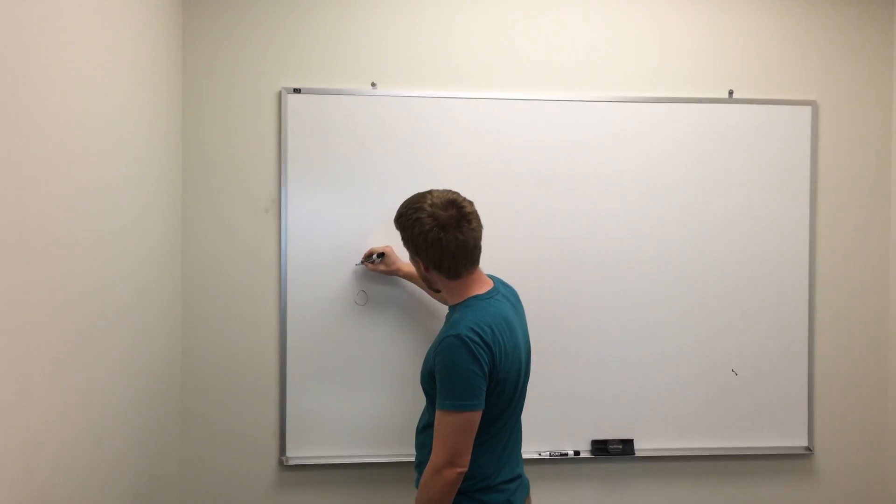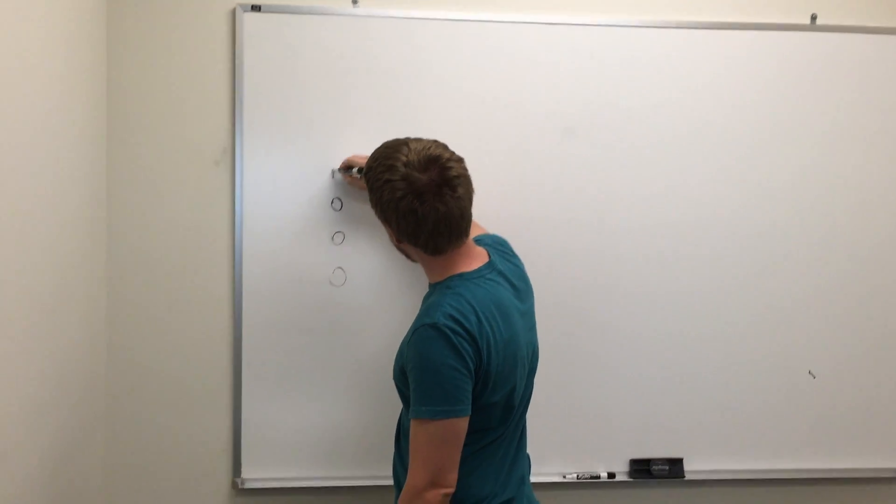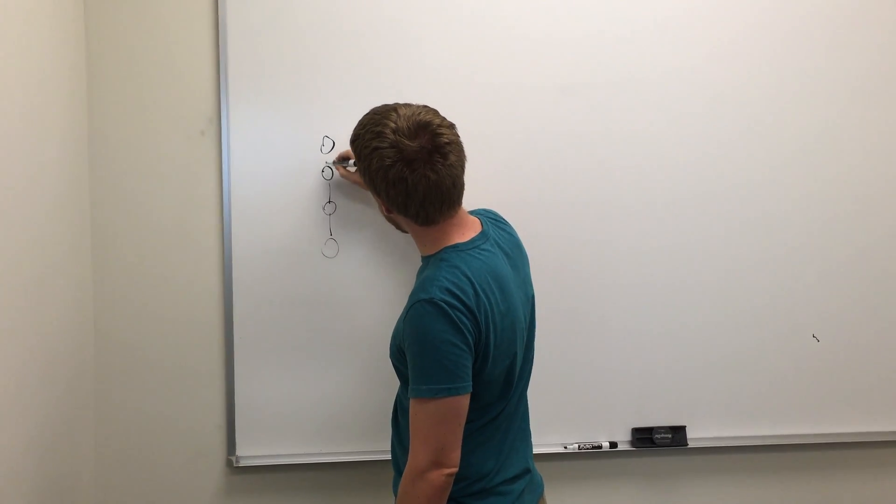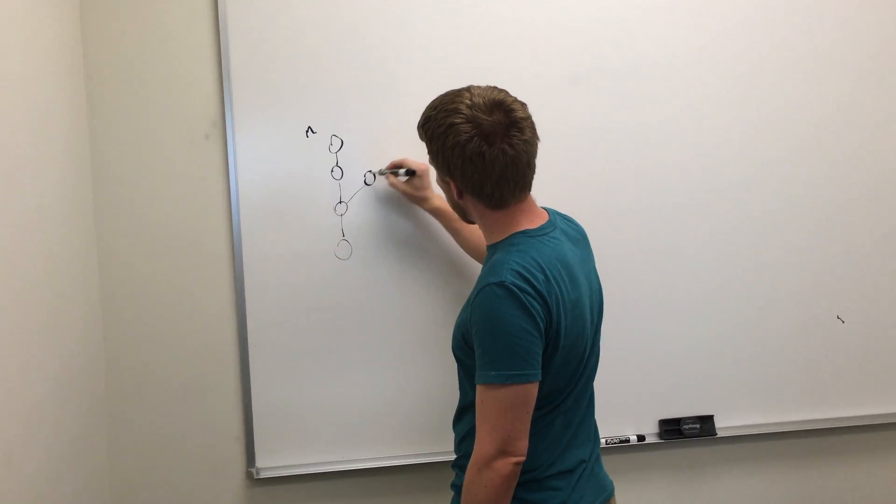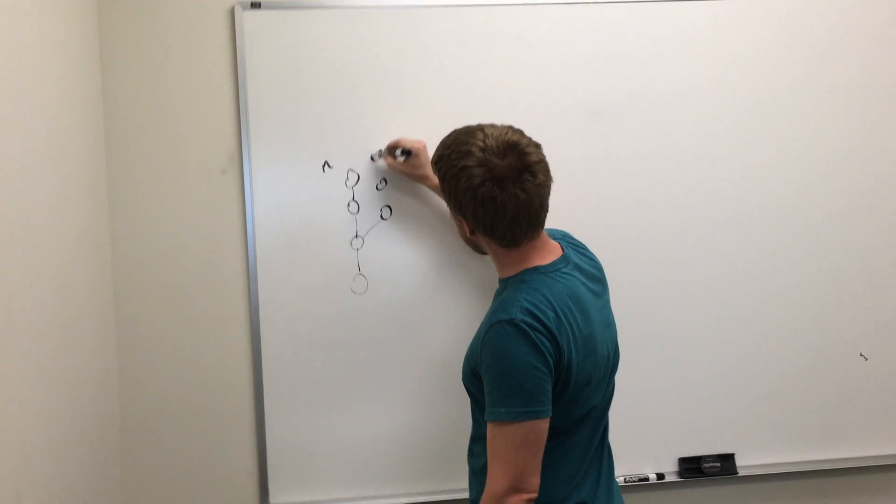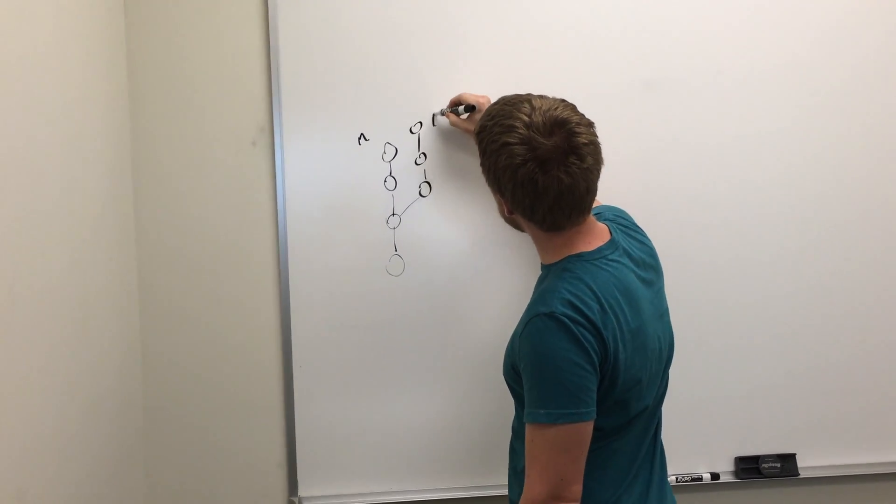So for starters, let's say we have a branch with commits on it - we'll call this one master. And then at some point we split off into a separate branch, a feature branch. We'll call this feature.